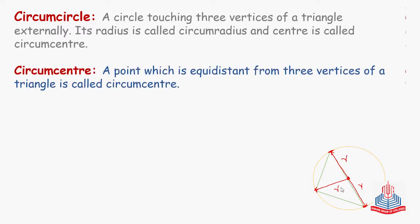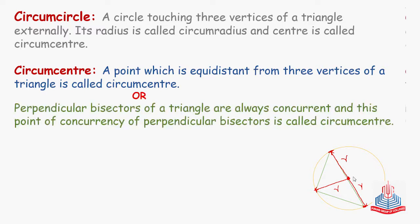Now, recall from practical geometry — when you drew the circumcircle, you first drew a triangle, then to find the center, you used perpendicular bisectors. Perpendicular bisectors of a triangle are always concurrent, and this point of concurrency of perpendicular bisectors is called the circumcenter. You drew perpendicular bisectors for all three sides, and where they were concurrent, that point was called the circumcenter.